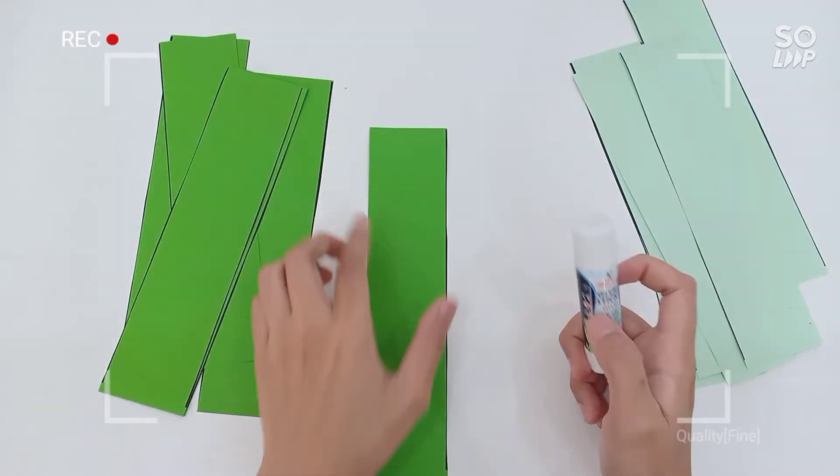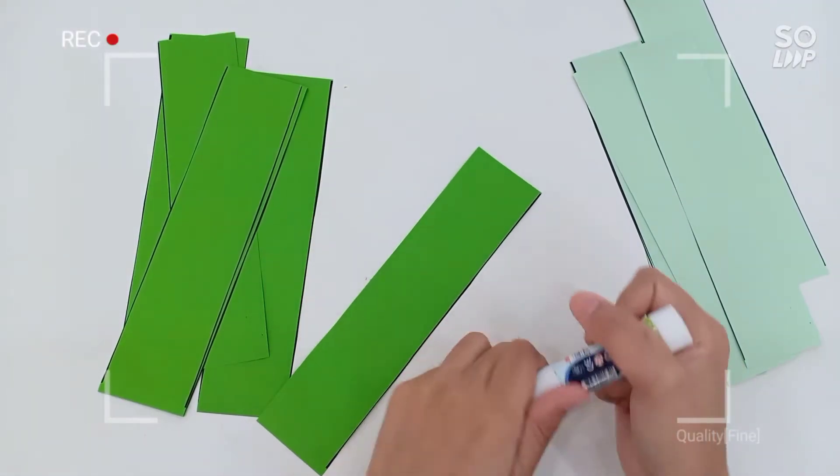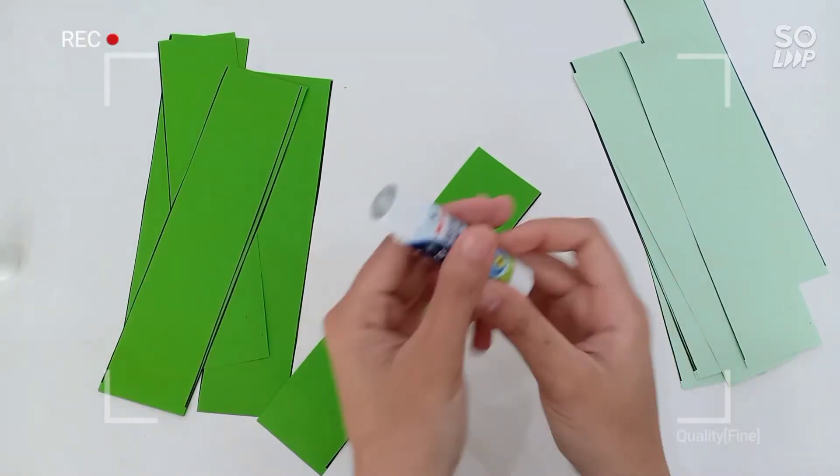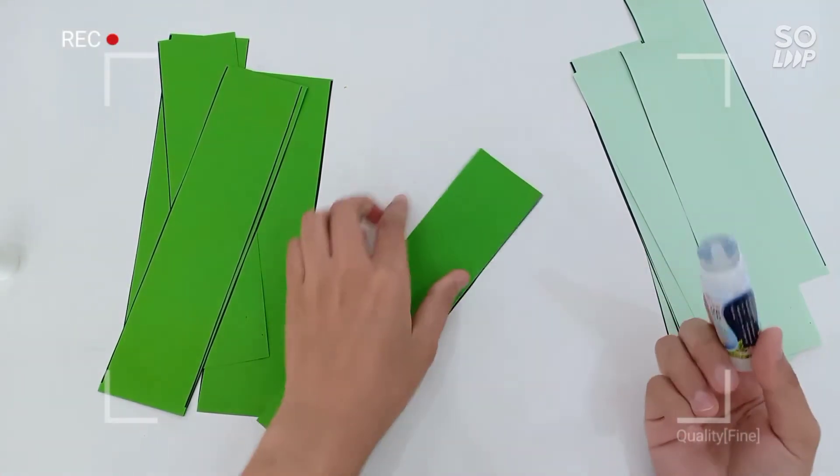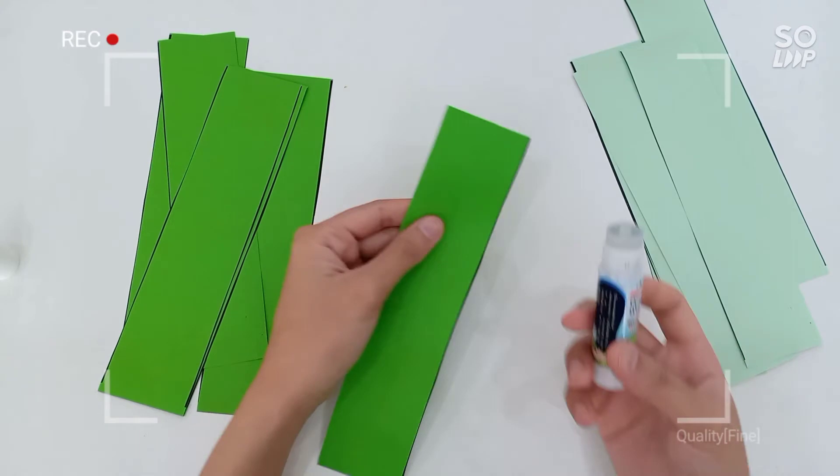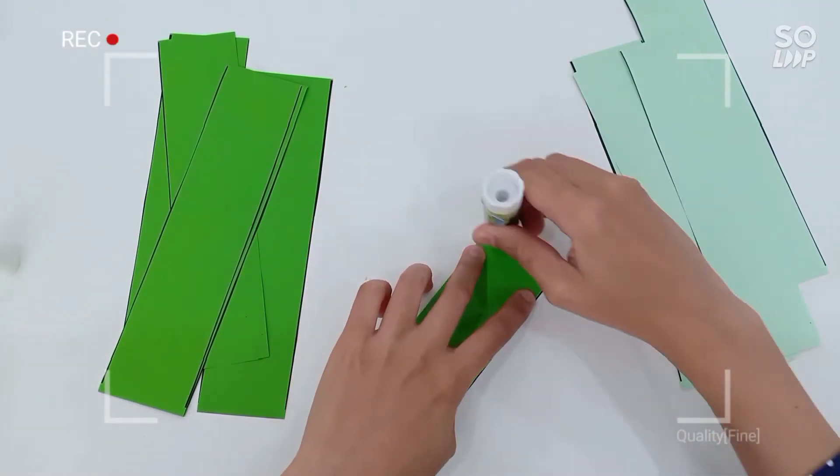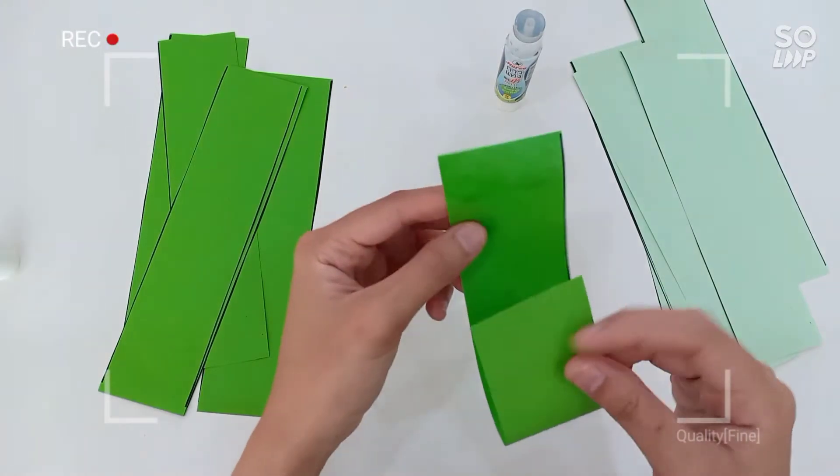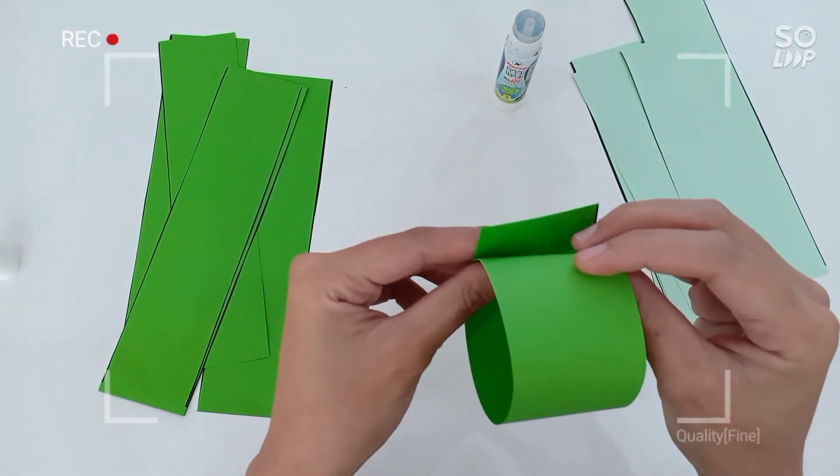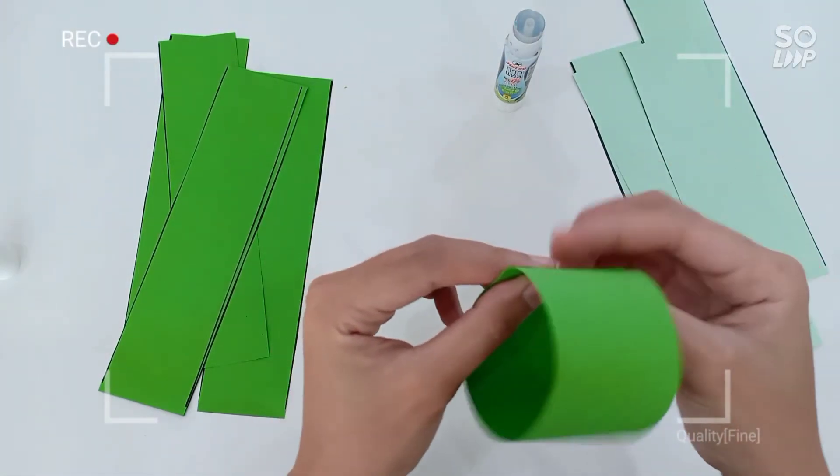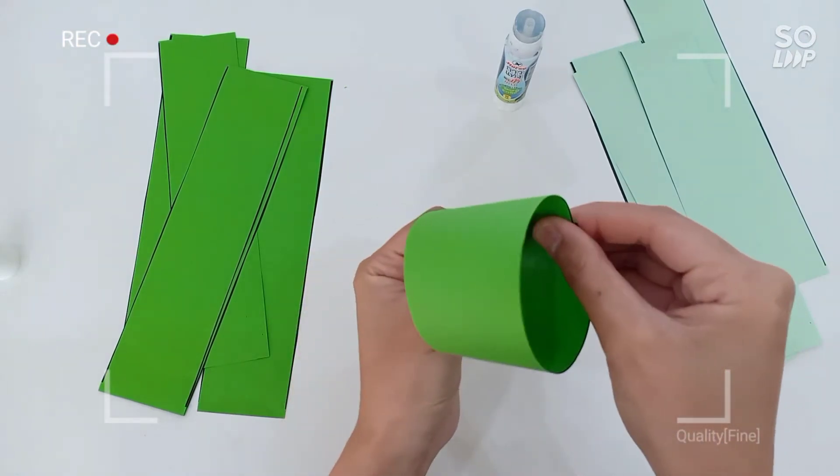So simply all we have to do is put some glue at the end of our paper. I'm starting with the dark green, then bring it around, stick it so that I make a circle.